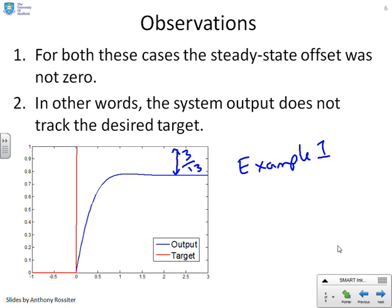So you can see clearly the output does not reach the target. The target in red, the output in blue, and the steady state difference is 3 over 13. So the output is not tracking the target for these two examples.